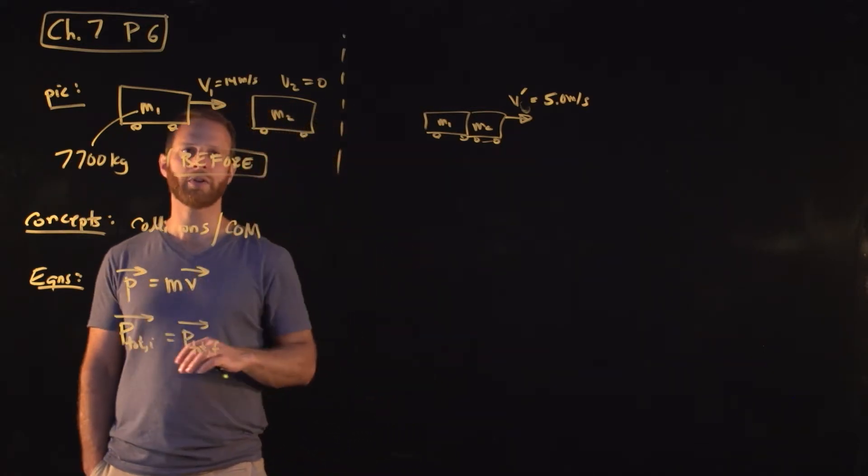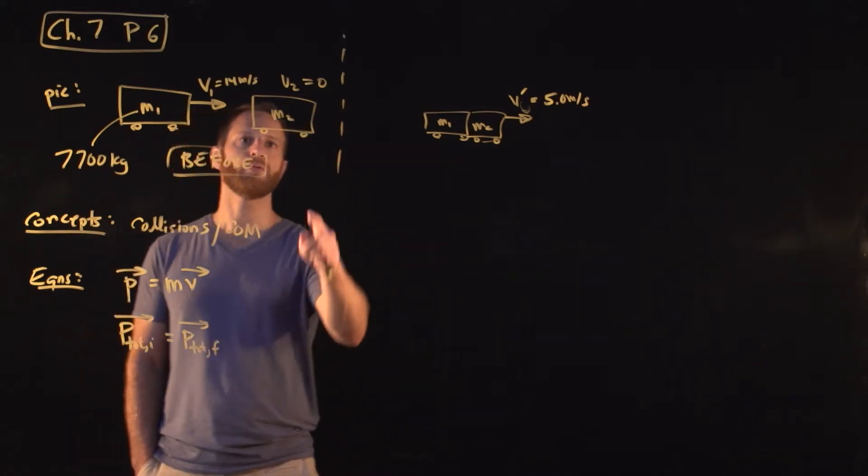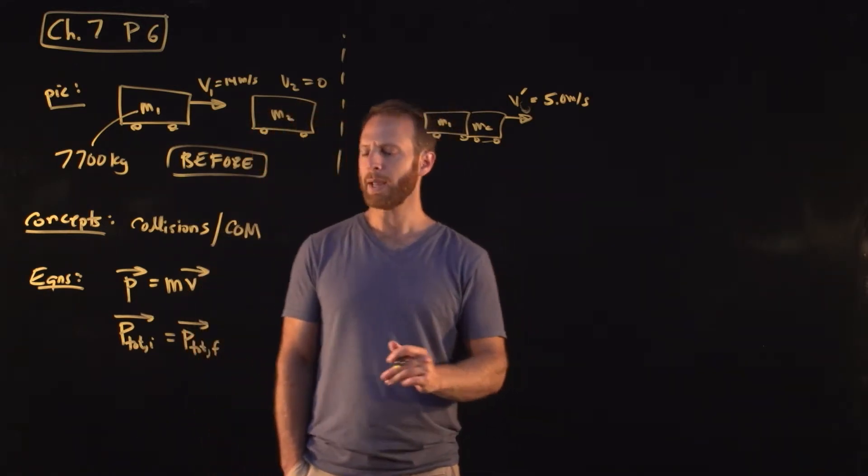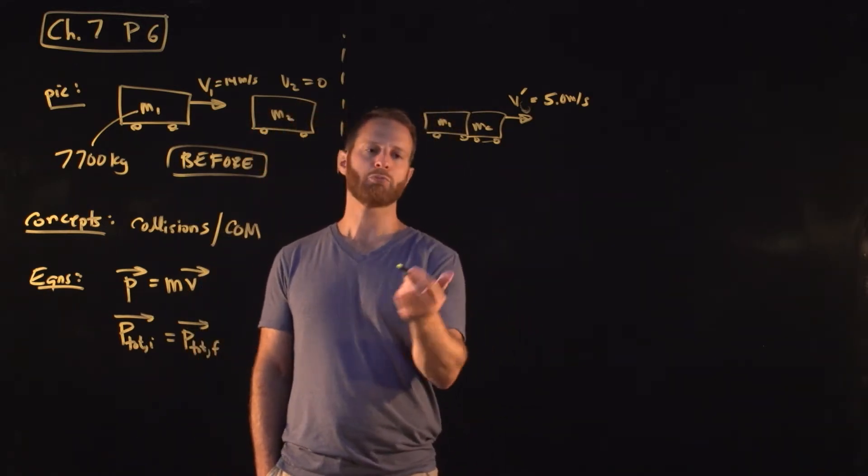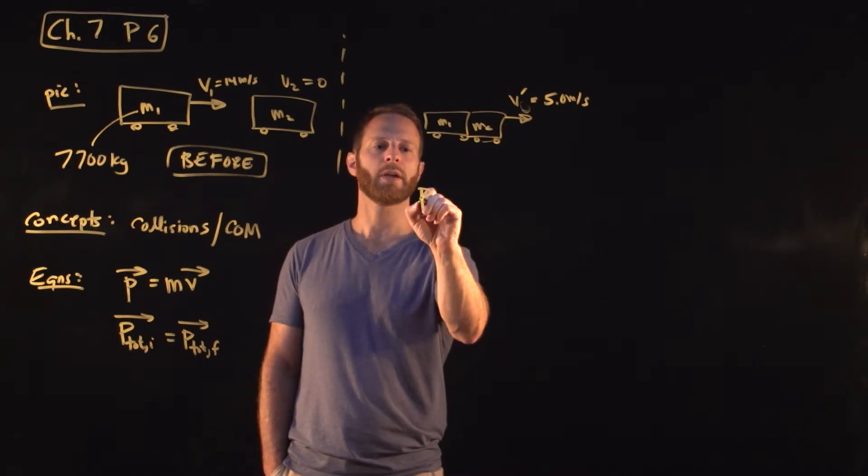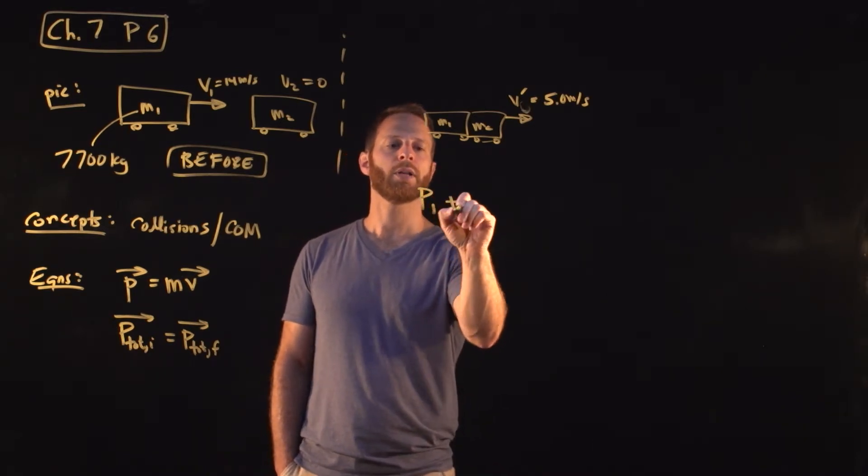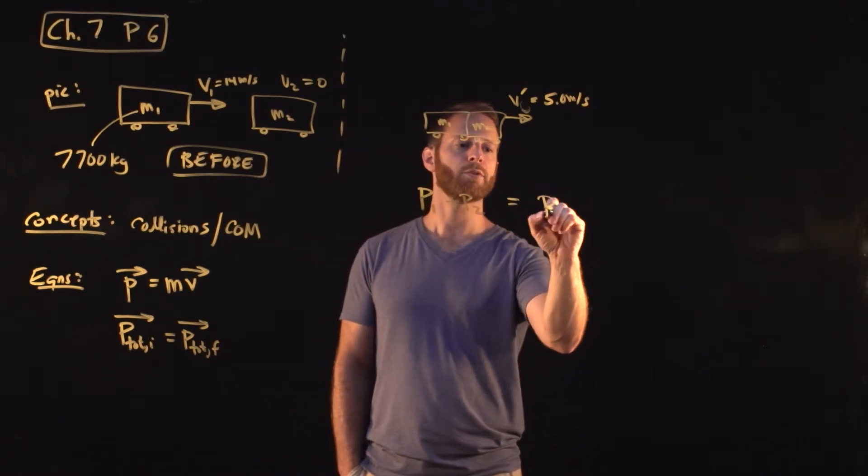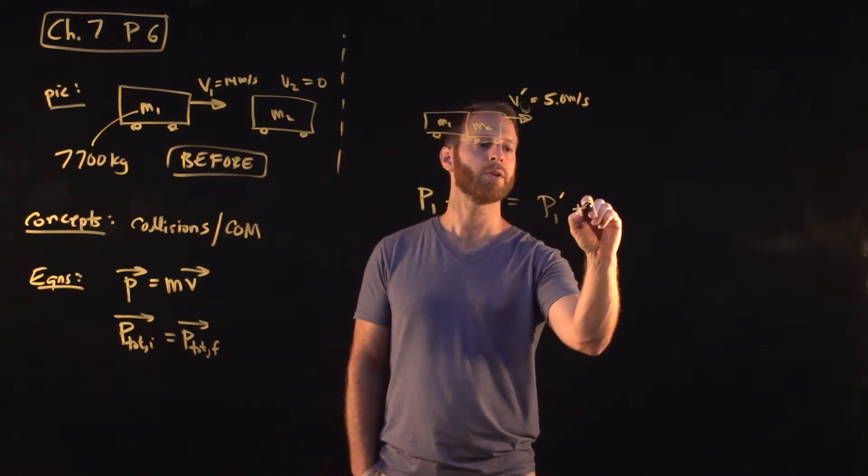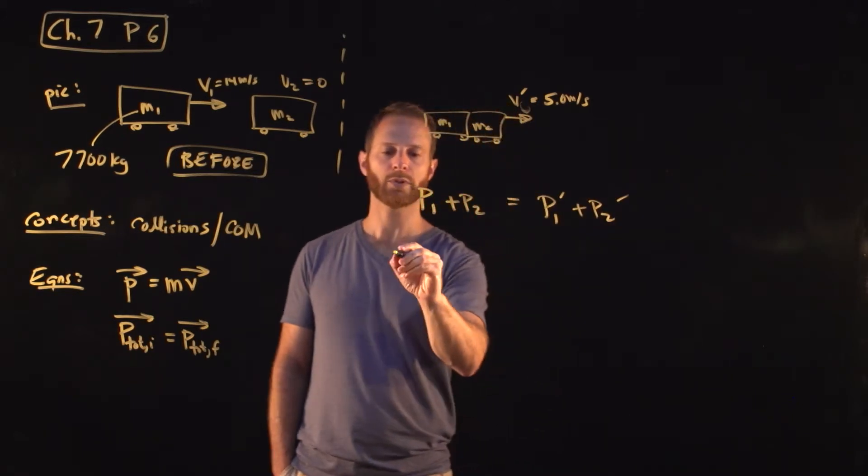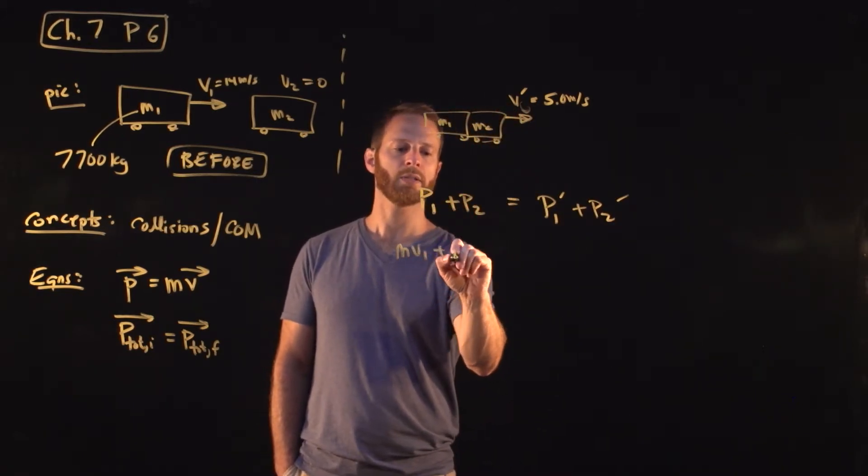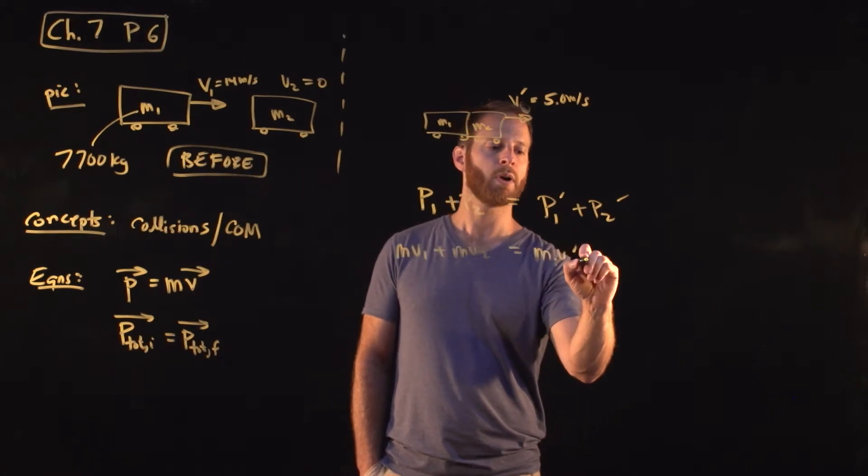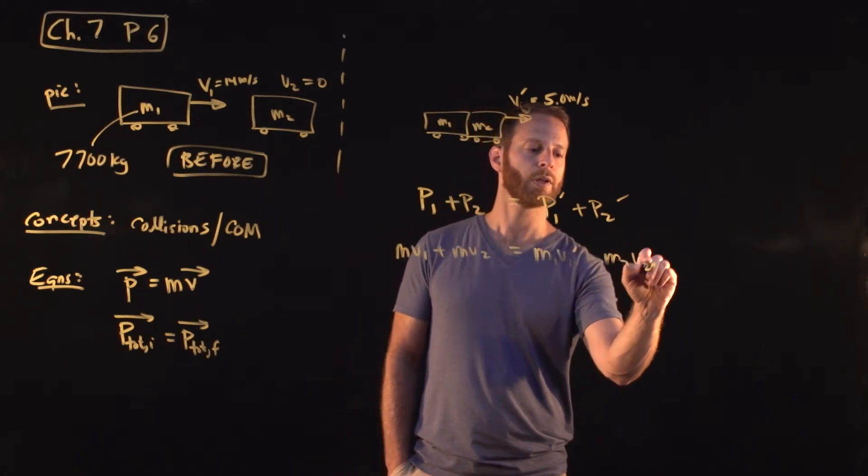Okay, so let's just try to use conservation of momentum here and see if we can figure out what is M2. That's what we're trying to find. Okay, initially, the momentum we have, we can just, let's be super careful. P1 plus P2, that's before, is equal to the momentum after P1 prime plus P2 prime. In other words, M1V1 plus M2V2 is equal to M1V1 prime plus M2V2 prime.